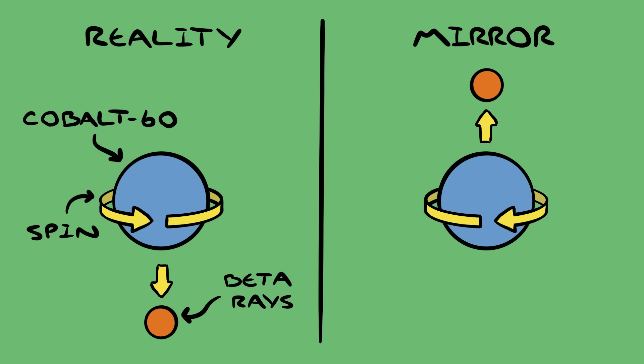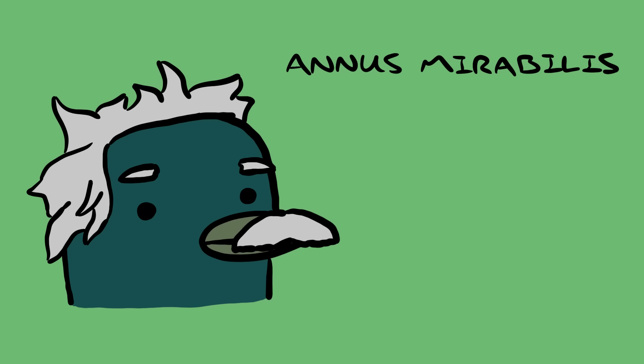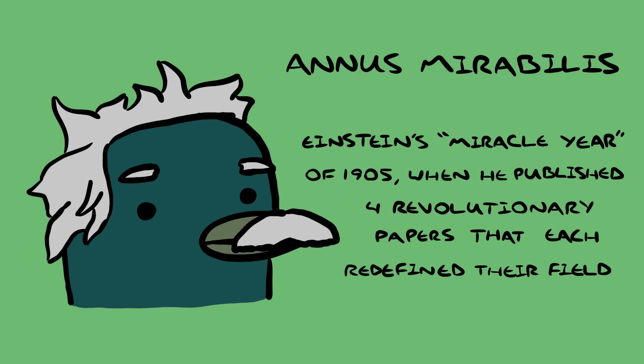The other big upset in our understanding of symmetry came in 1905, in Einstein's Annus Mirabilis. According to Special Relativity, we don't live in a 3D Euclidean space that changes as time goes on, but in a 4D space-time.